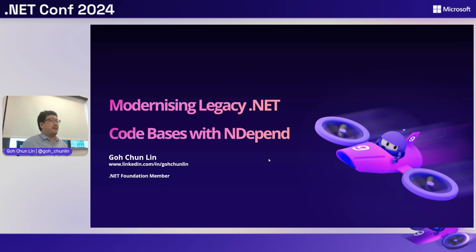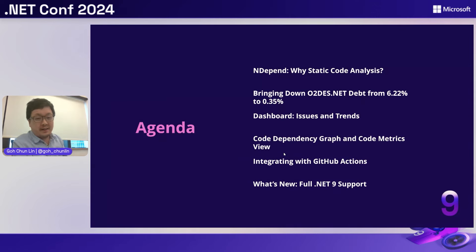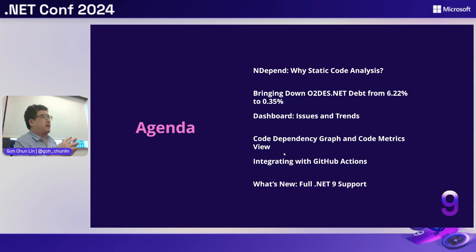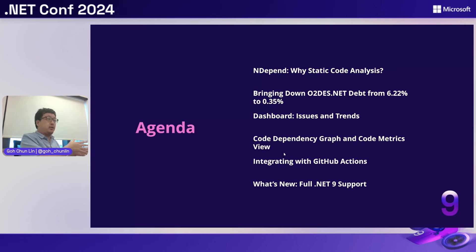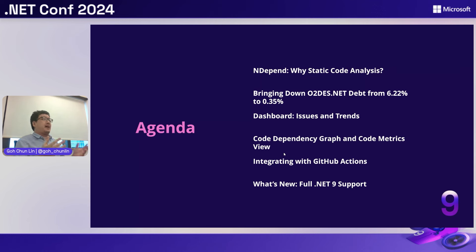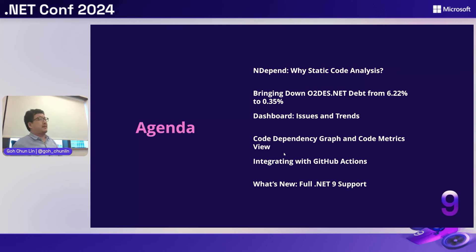Our agenda today: we'll use a sample called AutoDES.NET, which is an open source simulation project I've been working on. We'll see how NDepend as a static code analyzer can help modernize it from .NET Standard 2.1 to .NET 9. I'll review how NDepend plays an important role in this journey with features like the dashboard, code dependency graph, code matrix view, and how we can integrate it into our build pipeline.